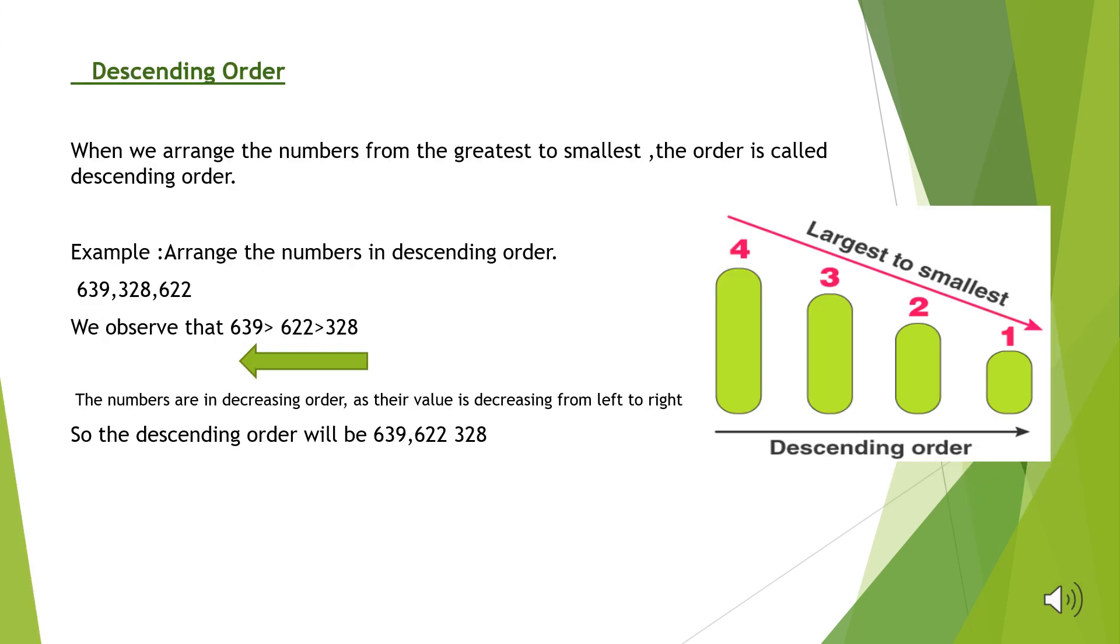Descending order. When we arrange the numbers from the greatest to the smallest, the order is known as descending order. For example, 639, 328, 622 to arrange them in descending order.